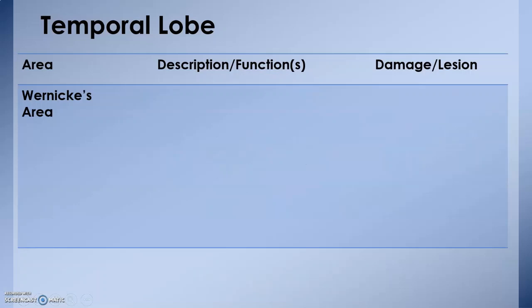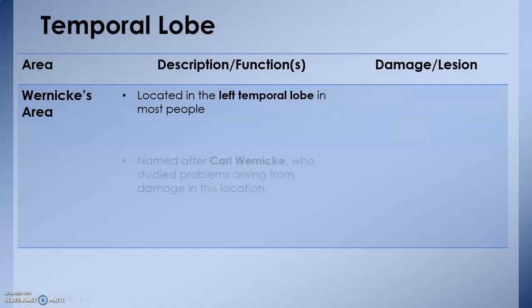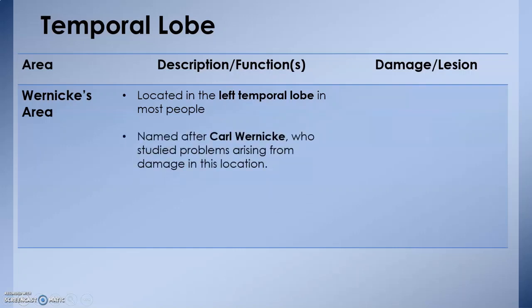The third important area in the temporal lobe is the Wernicke's area. It is located in the left temporal lobe in most people. It is named after Carl Wernicke, as the name suggests, and yes, Carl Wernicke is a contemporary associate of Paul Broca. He was the first person to study problems that arose as part of this area.